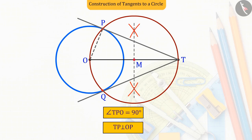So we can say that TP will be the tangent line of the circle. So can we also say that TQ is also a tangent line of the circle? Using what we learned today, you can find the answer to this question yourself.